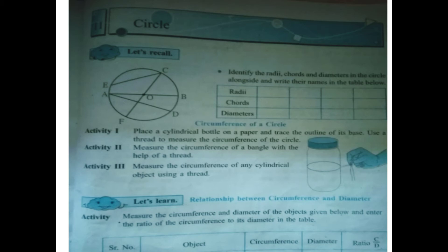Now let us do the sums on textbook page number 75. Identify the radii, chords, and diameters in the circle alongside and write their names in the table below.